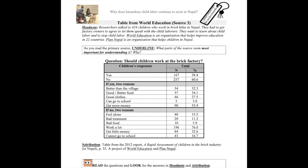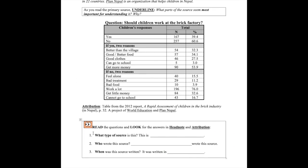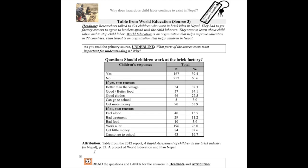Let's read the attribution and then the headnote to find out what type of source it is, who wrote it, and when it was written. Attribution: table from the 2012 report, 'A Rapid Assessment of Children in the Brick Industry in Nepal,' page 32 — a project of World Education and Plan Nepal. Headnote: